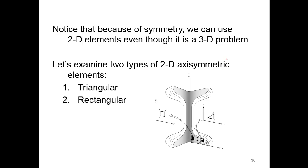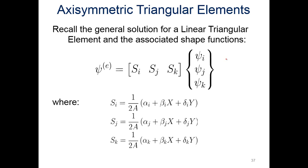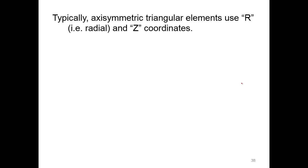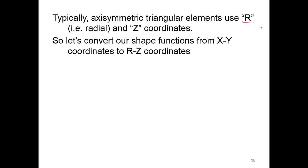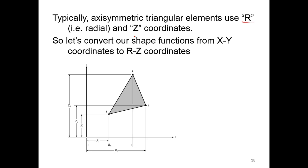We're going to examine two types of 2D axisymmetric elements: triangular and rectangular. Remember the general solution for a linear triangular element and its associated shape function - one over two times the area of the triangle times alpha, beta, and delta. Typically with axisymmetric triangular elements, we use R (the radius) and Z coordinates. So we're just going to convert our shape functions from X and Y to R and Z coordinates. Let's do that conversion here.